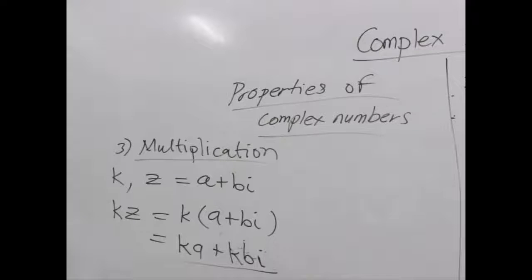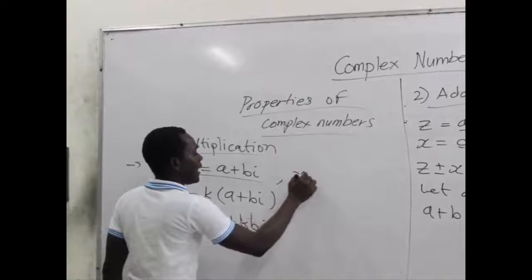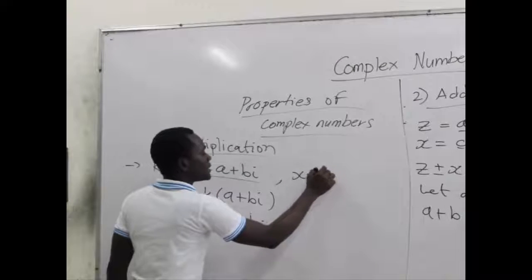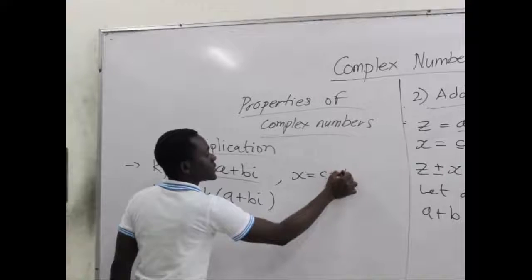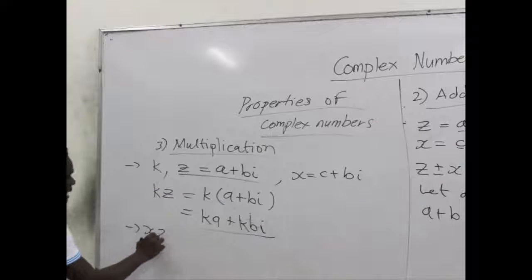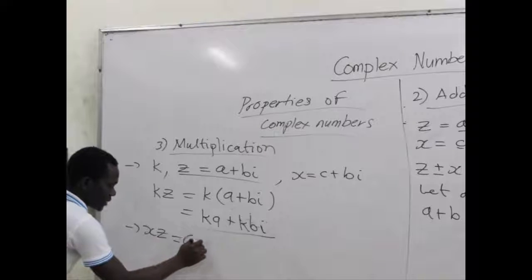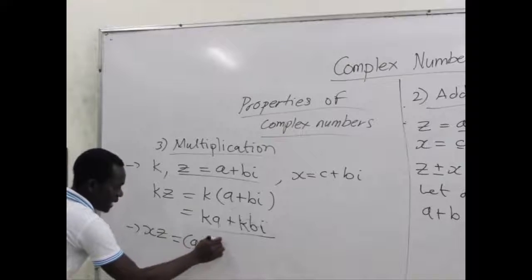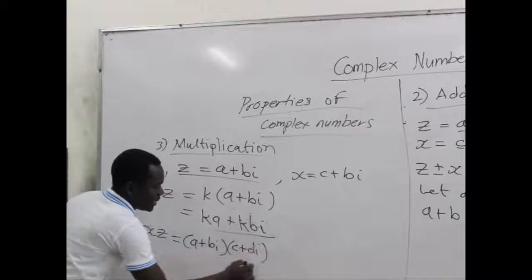Also for the second aspect, assuming we have two complex numbers. So this z is, let's say, an x which also has the parts c plus di. So xz will give us (a plus bi) times (c plus di).